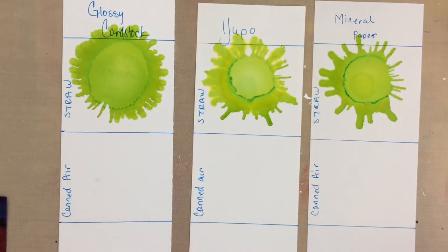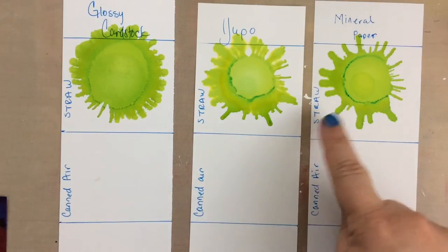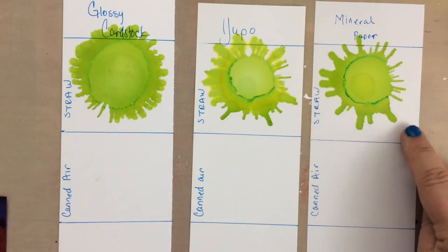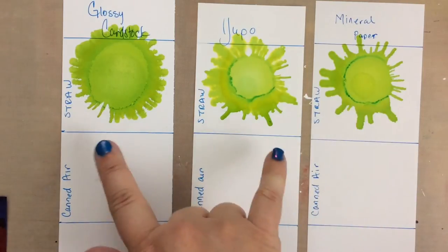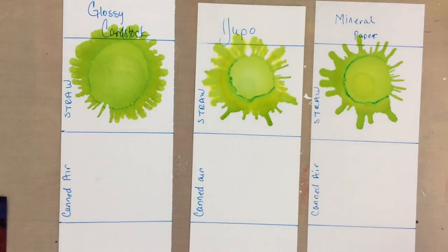Okay, so still even a little bit different pattern, and of course this one will dry much more matte than these two. All right, so that's the example with the straw.